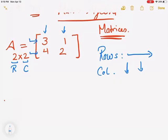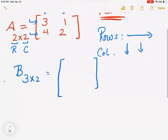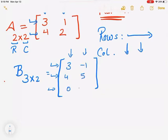So this is a matrix of size 2 by 2. Now let's say matrix B is 3 by 2. That means I would see two big brackets, and in those brackets I would have three different rows with two columns. Let me put some random numbers: 3, negative 1, 4, 5, 0, and negative 2.